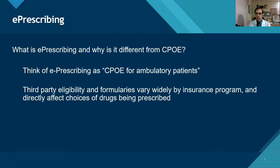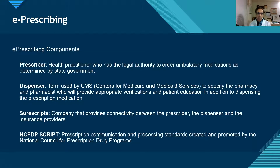So what is e-prescribing and how is it different from CPOE? You can think of e-prescribing as CPOE for ambulatory patients — in the retail, community, or independent pharmacy setting, or even in the clinic setting. This is a little bit different from what we do in the hospital, because when we're filling prescriptions in the community setting, we're a lot more focused on third-party billing insurance programs and making the right choices on the exact product that is used.